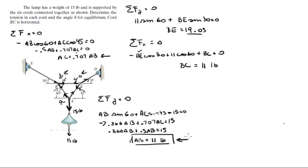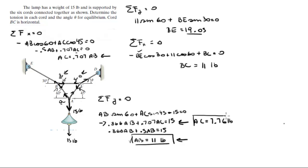Since we have AB, we can use it to find AC by plugging AB in, and we get that AC is equal to 7.76 pounds.